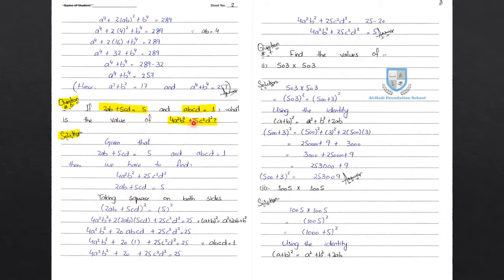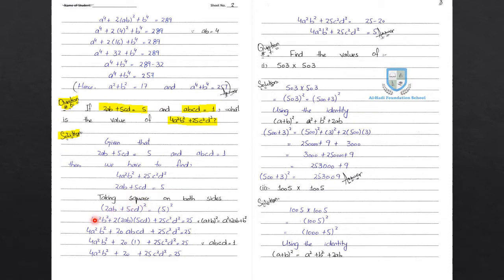Given: 2ab plus 5cd is equal to 5, and abcd is equal to 1. We have to find 4a square b square plus 25c square d square. Taking square on both sides: 2ab plus 5cd whole square is equal to 5 square. We use the a plus b whole square identity and expand it.